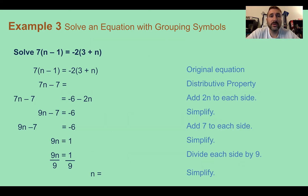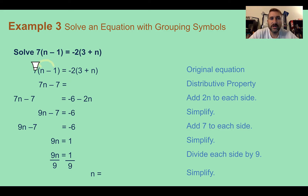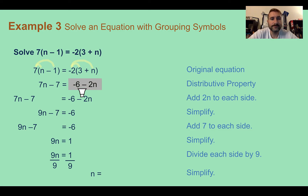Example 3: solve an equation with grouping symbols. We want to solve 7 times the quantity n minus 1 equals negative 2 times the quantity 3 plus n. Our first step is to use the distributive property to eliminate parentheses and simplify each side separately. On the left: 7 times n is 7n, and 7 times negative 1 is negative 7. On the right: negative 2 times 3 is negative 6, and negative 2 times n is negative 2n, giving us negative 6 minus 2n. Remember, negatives and subtraction are the same symbol.